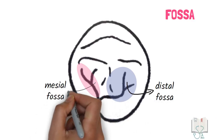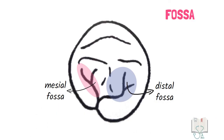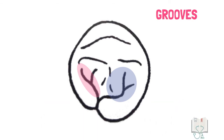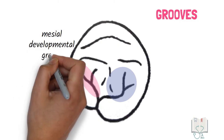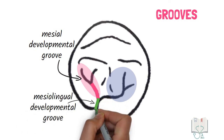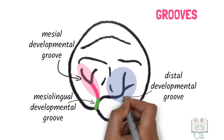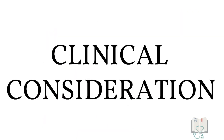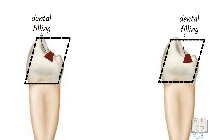The occlusal surface has two fossae: the distal fossa and mesial fossa. They are not called triangular fossae as in other teeth because they have irregular shapes — the mesial fossa is more linear in shape whereas the distal fossa is more circular. Three grooves are seen from the occlusal aspect: the mesial developmental groove in the mesial fossa, which extends and joins the mesiolingual groove on the lingual surface, the distal developmental groove in the distal fossa, and a few supplementary grooves may also be seen.